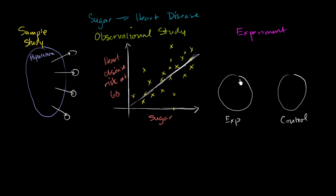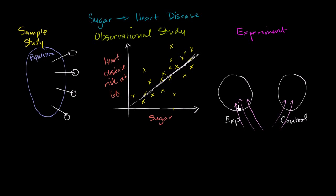And what you would do, if you wanted to run this type of experiment — and as we'll see, this type of experiment probably wouldn't be run because some would consider it unethical, and I would consider it unethical as well — is you would randomly take 30-year-olds and put them in one of these two groups. When we say randomly, you don't want to put all the healthy people in one group and all the unhealthy people in the other, or put all people of one demographic or economic status in one group. You want it to be random. So you randomly put people into these two groups, and then in the experimental group, you would change one variable — the variable you care about: sugar. All of the people in this group would have to drink, say, a cup of syrup every night — they have to have a minimum sugar intake — essentially forcing extra sugar into this group that you're not forcing into the control group.